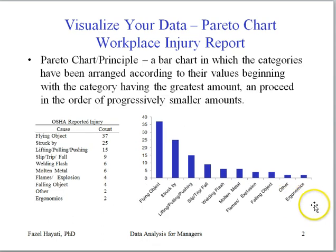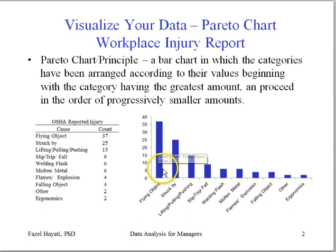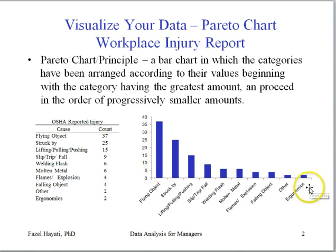The next chart used to visually describe our data is known as a Pareto chart. A Pareto chart is a chart in which the categories have been arranged according to their values, beginning with the category having the largest amount and proceeding in order of progressively smaller amounts — in other words, arranging your data in descending order. This is the same injury data listed from highest to lowest value.